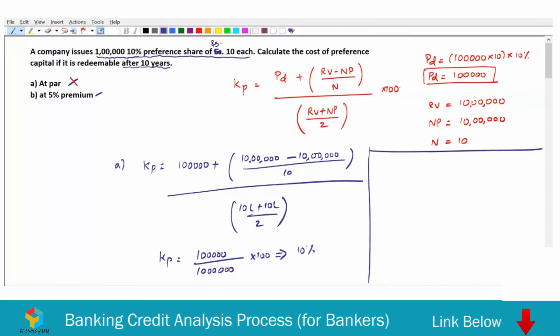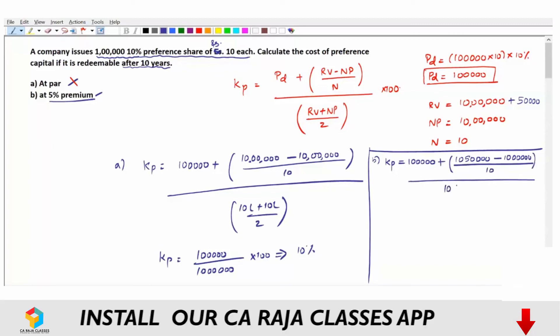What will be the redemption value when it is at 5% premium? With this redemption value of 10,00,000, you have to add 5%, that is 50,000. So let us see what will happen. That is case B. Cost of preference share is equal to 1,00,000, which is the preference dividend. Redemption value is going to be 10,50,000 minus the net proceeds of 10,00,000, divided by 10 years, whole divided by RV plus NP by 2, that is 10,50,000 plus 10,00,000 whole divided by 2.